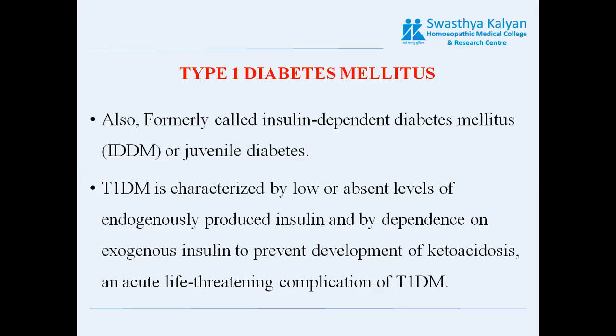Ketoacidosis is an acute life-threatening complication of Type 1 diabetes mellitus. Diabetic ketoacidosis is a build-up of acids in the blood when blood sugar is too high for too long. It is life-threatening and occurs basically when the blood doesn't have enough insulin.